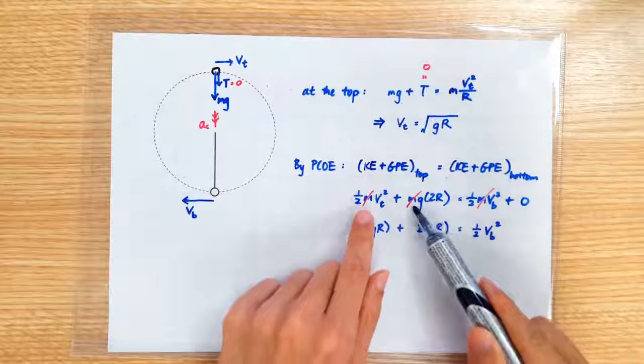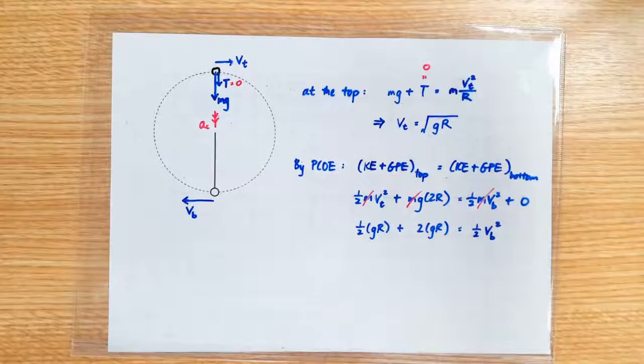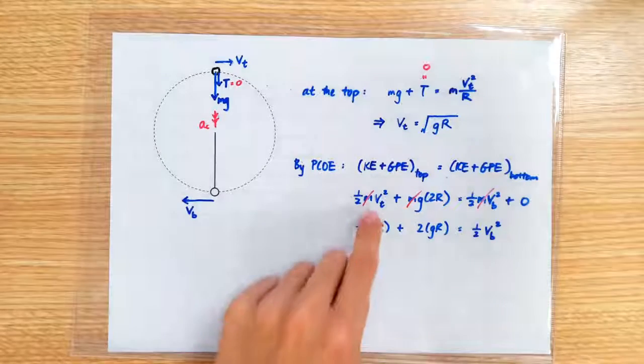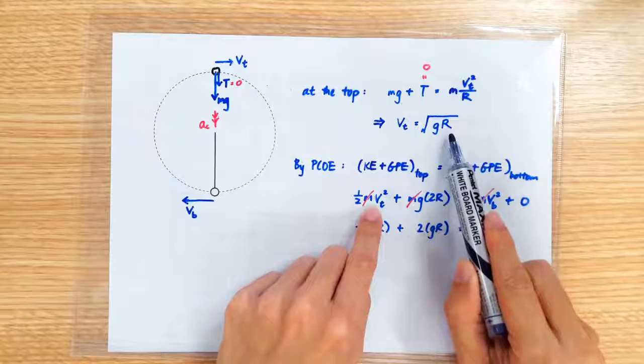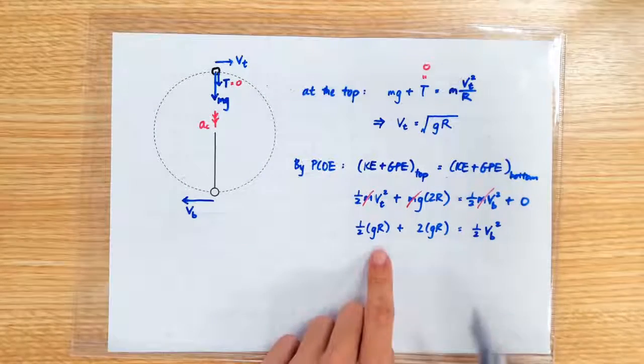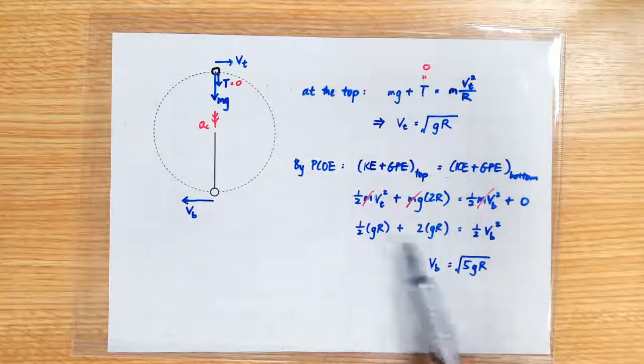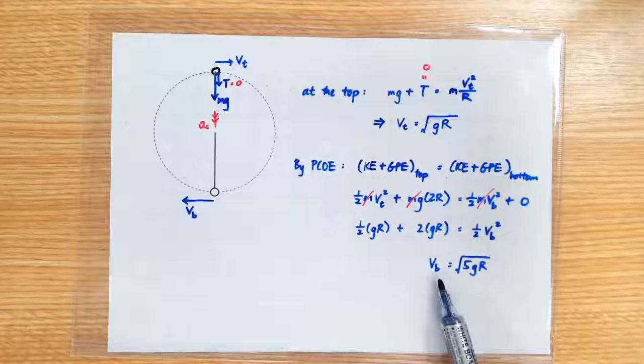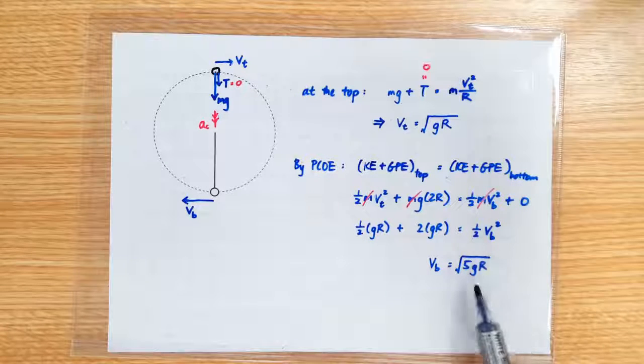So the mass of the stone gets cancelled out and we are going to replace vt with square root of gr. So vt square is just gr. Simplify the equation and you get vb to be equal to square root of 5gr.